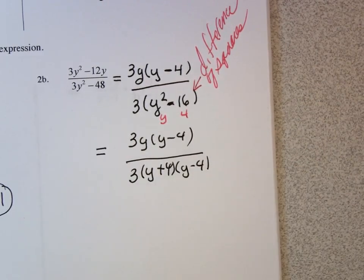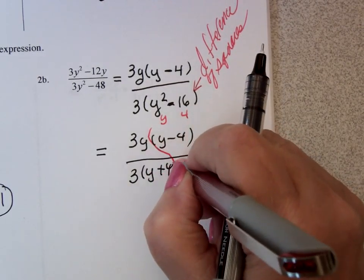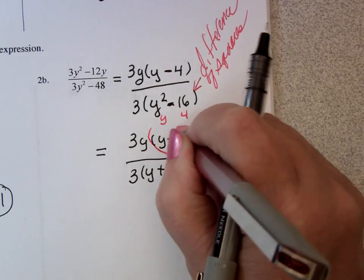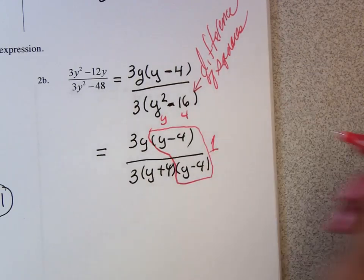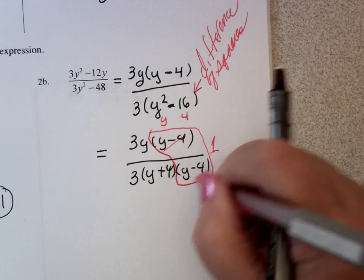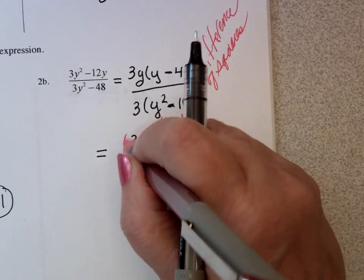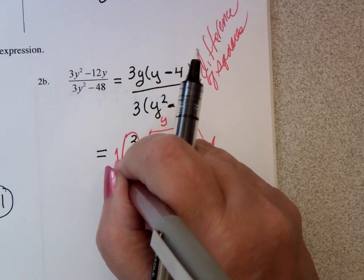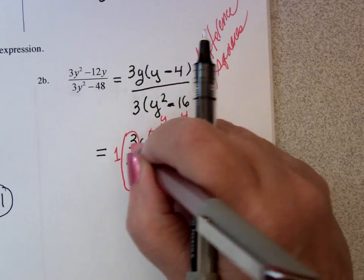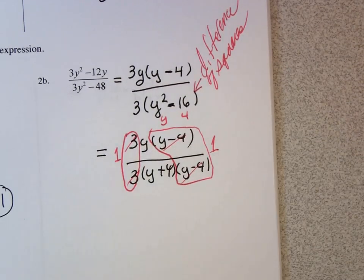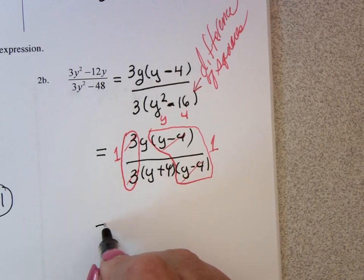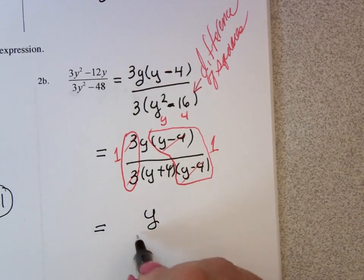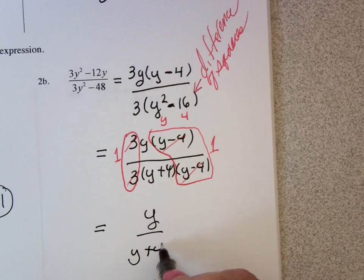Now you notice that there is a y minus 4 in the numerator and in the denominator. That forms a 1, so essentially they reduce out. There is a 3 in the numerator and a 3 in the denominator. That also forms a 1, and so that reduces out. And what you are going to be left with is y over y plus 4.